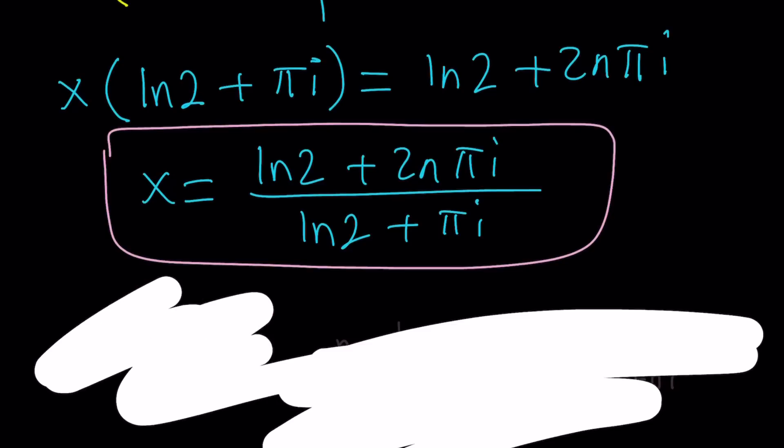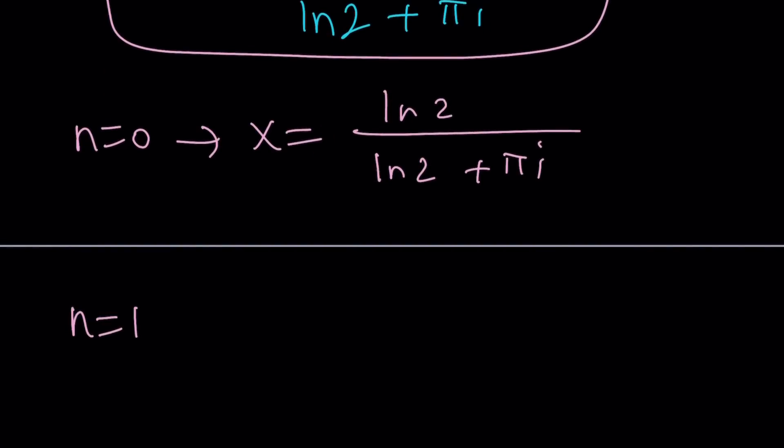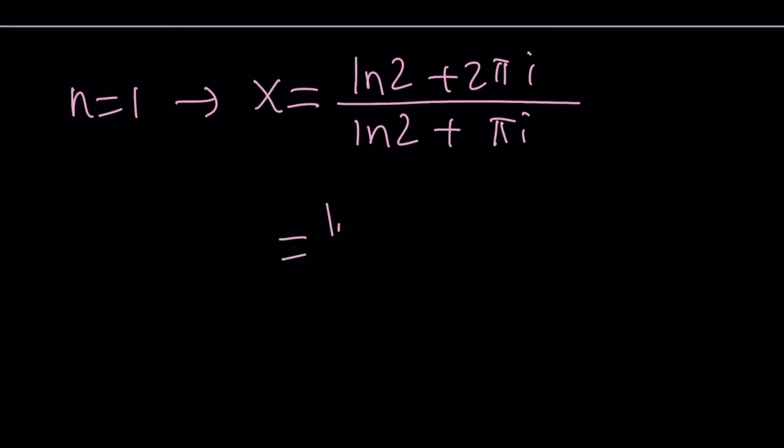Let's go ahead and forget about that and look at some other specific values, such as if n is 0, we're going to get x equals ln 2 over ln 2 plus pi i. That's going to work, and you can always test it out. So, if n is equal to 1, we're going to get something nicer: ln 2 plus 2 pi i divided by ln 2 plus pi i. Does that look like 1? No, but is it close to 1? It kind of looks like it's close to 1, right? Now, think about it. You can write this as ln 2 plus pi i over ln 2 plus pi i, because I separated this into pi plus pi, plus pi i over ln 2 plus pi i.